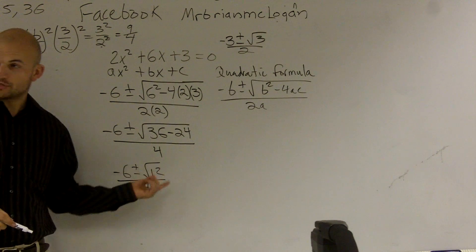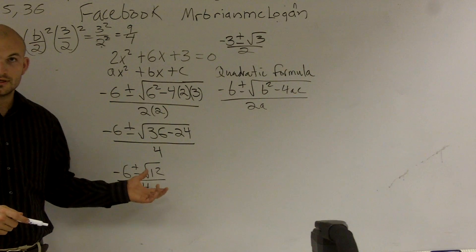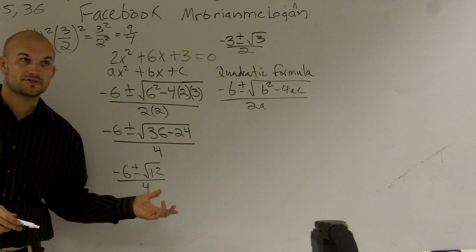Now, we can reduce our radical. We can simplify this radical to 4 times the square root of 3. So it would be 2 radical 3.